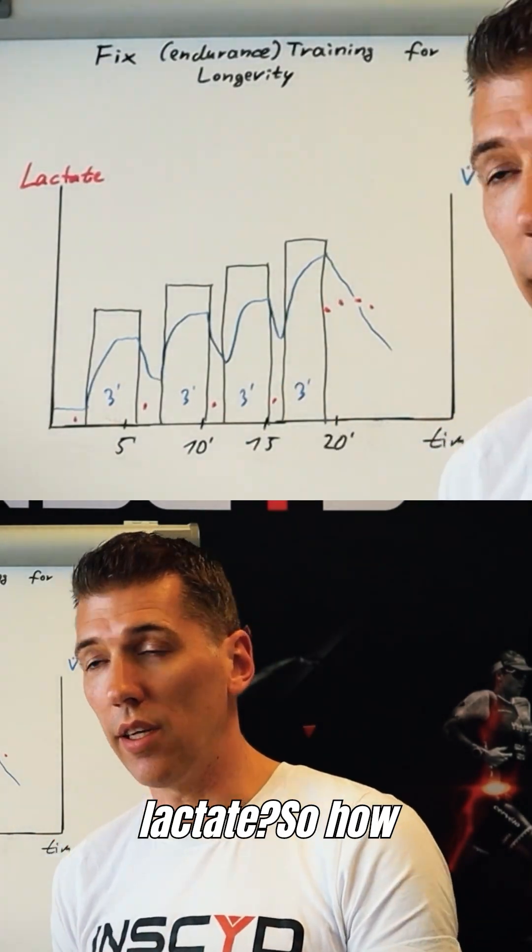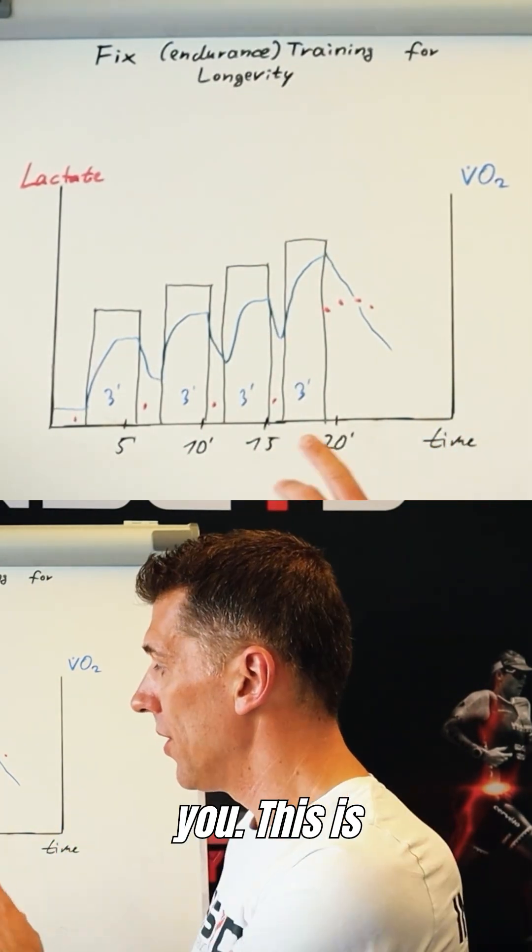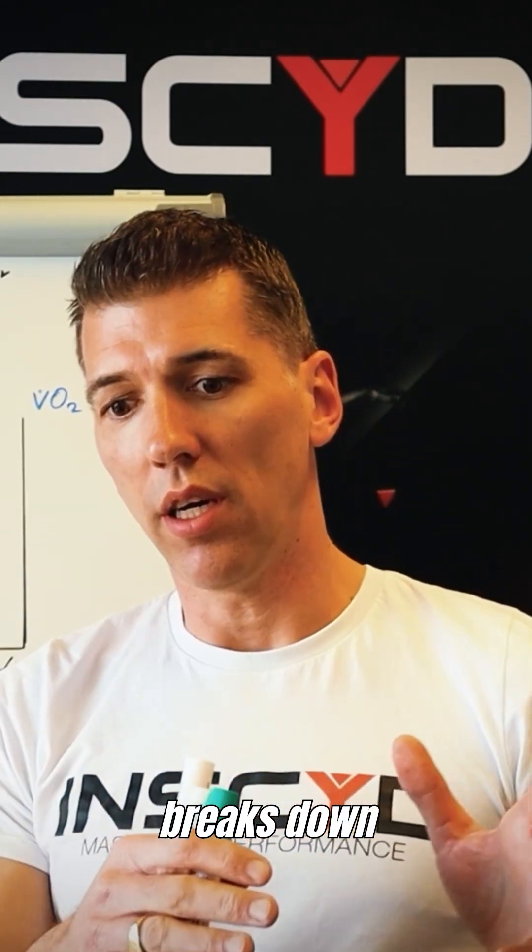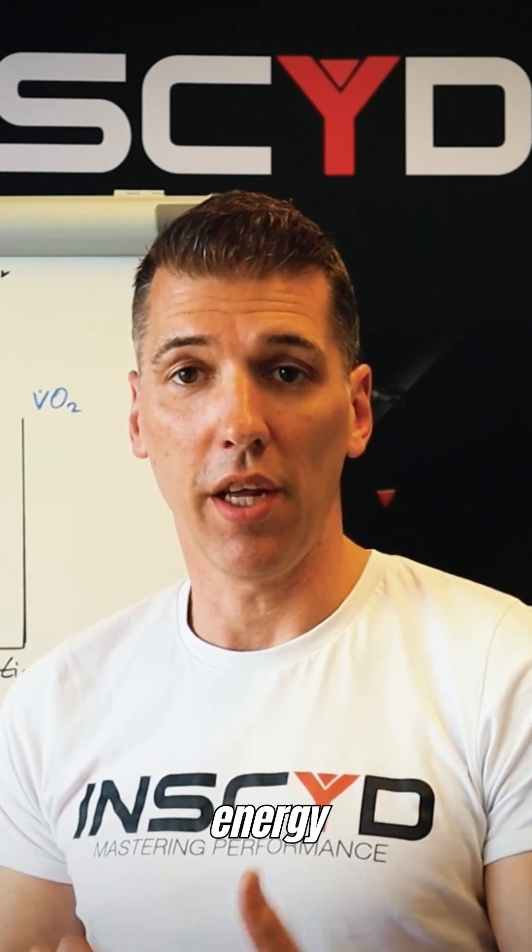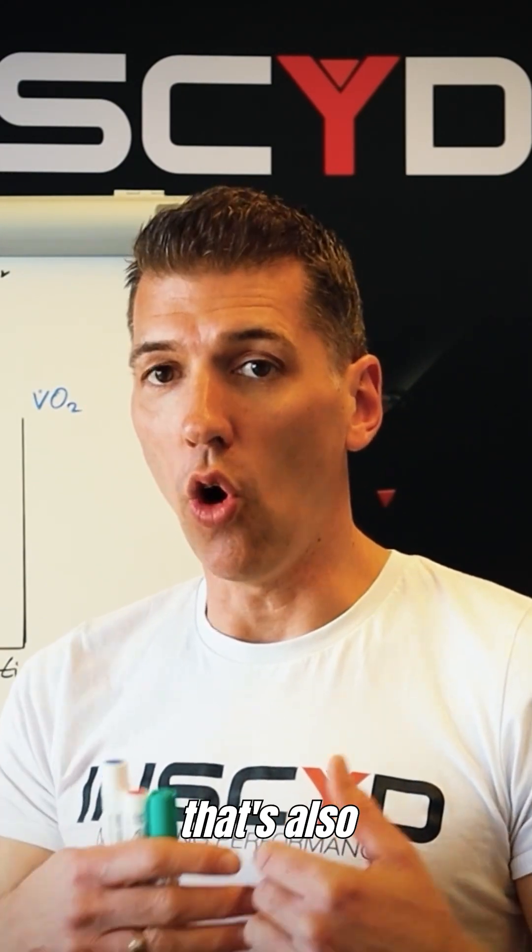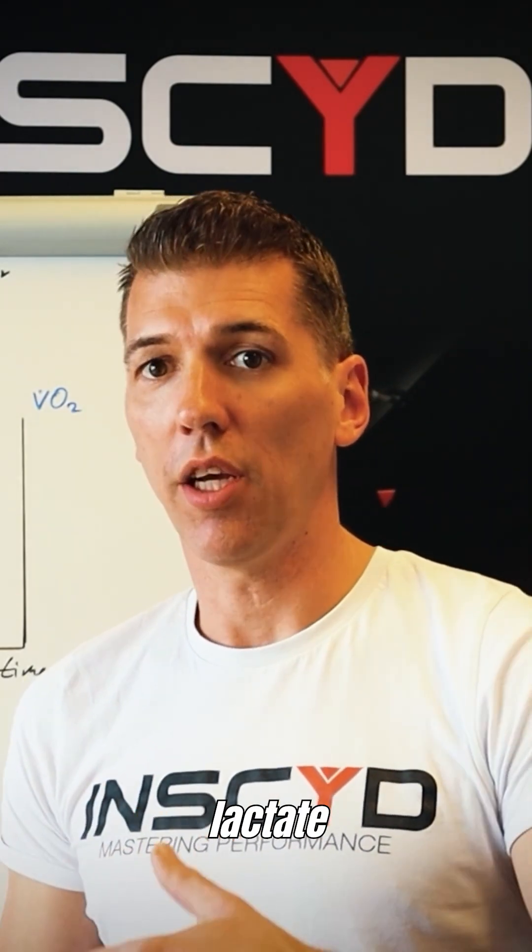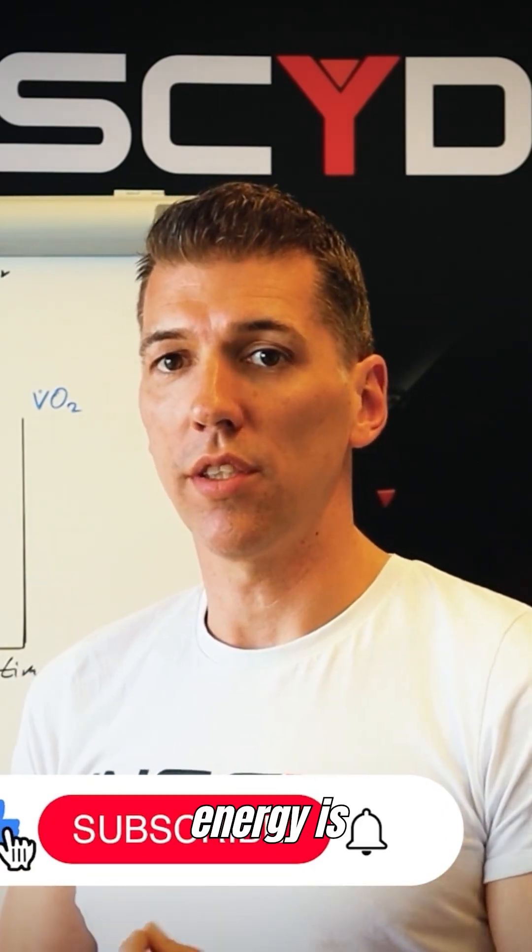How does that relate to lactate? So how do we get the VO2 max? This lab level accuracy I'm going to show you is because whenever the body, the cell, breaks down glycogen and glucose and produces lactate, that comes with ATP production, that comes with energy production. And that's also proportional. So once we know the lactate production rate, we know also how much energy is derived from glycolysis.